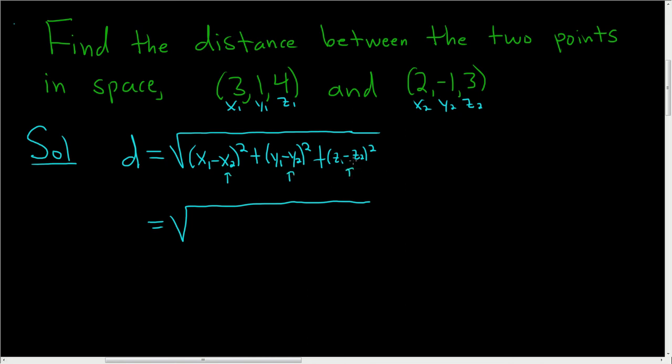So here we have 3 minus 2, and then you square the result, plus 1 minus negative 1, right? So it's going to be 1 plus 1, and then plus 4 minus 3.